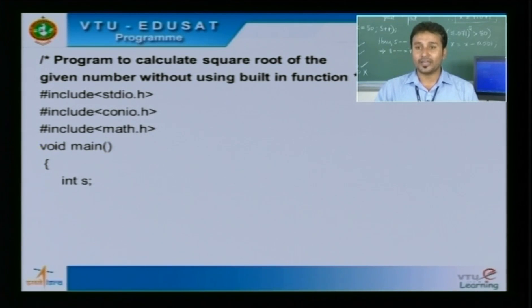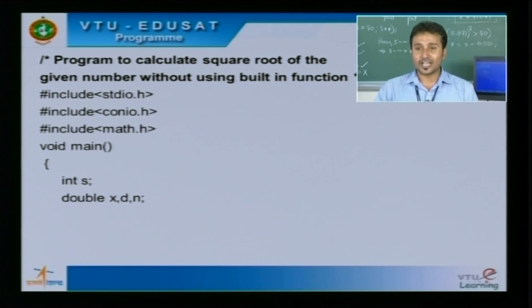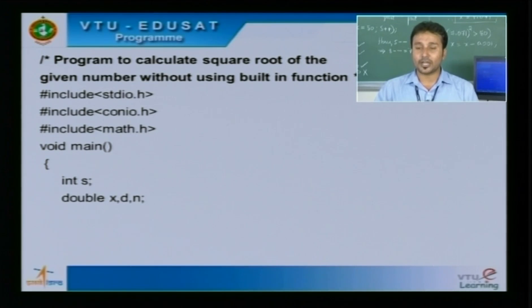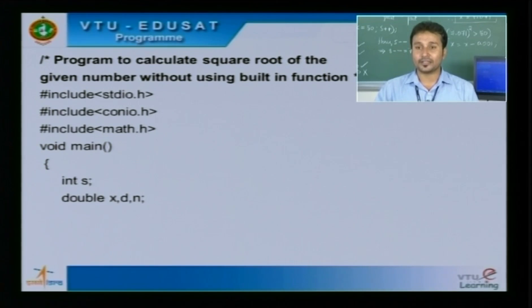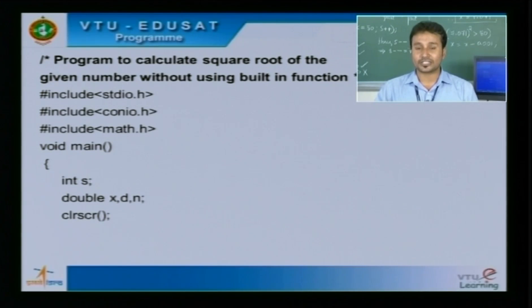The very first line inside void main is the declaration part. There are two declaration statements: the first declares variable s in integer data type, and three variables x, d, and n declared with double data types. Here n is the input variable, x is the computed square root output variable, and s and d are intermediate variables. Next we have clrscr, which clears the output screen.